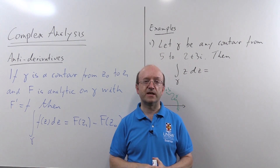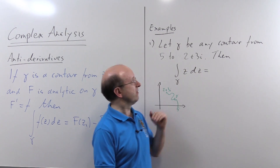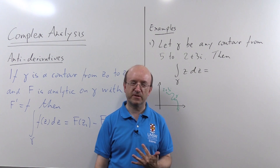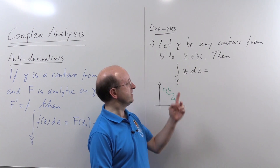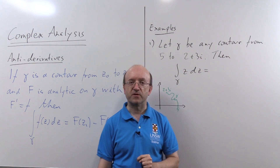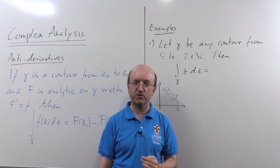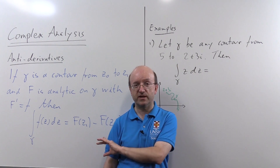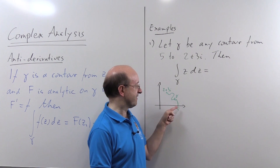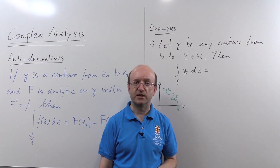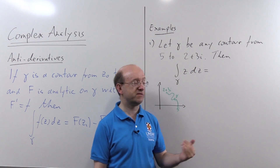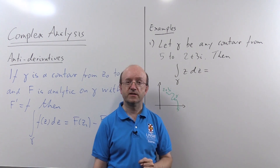What I'm going to do is work through a few examples. The first one, which I've already got written up here, is a very simple example — it's exactly the same integral we met in a previous video. I'm just integrating the function z between 5 and 2+3i, along gamma being the straight line from 5 to 2+3i, and also for a quarter circle, and we got the same answer. We're going to see in a minute that that's not an accident, because there's an antiderivative of this function z.